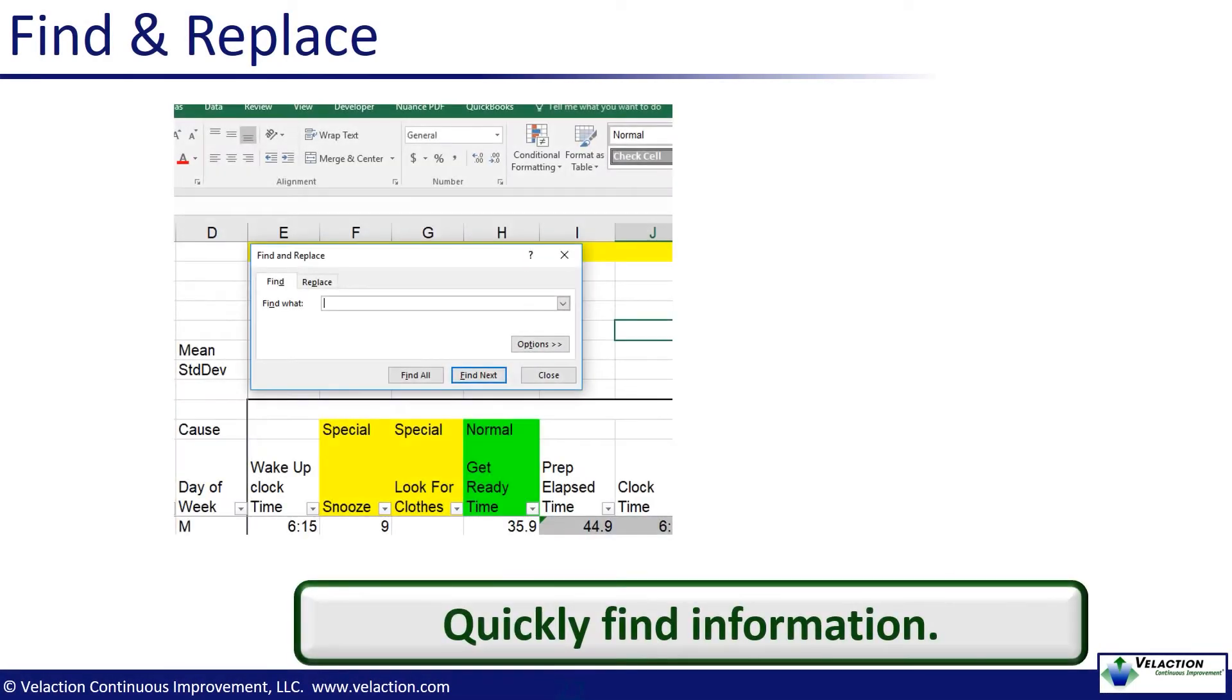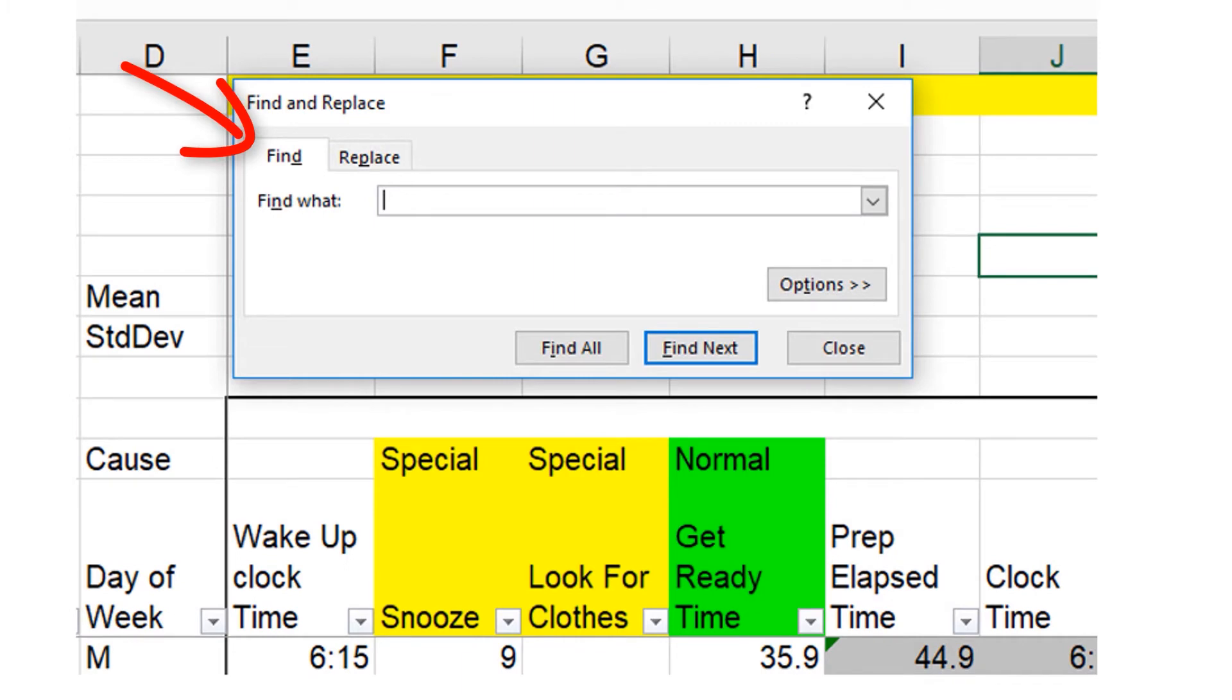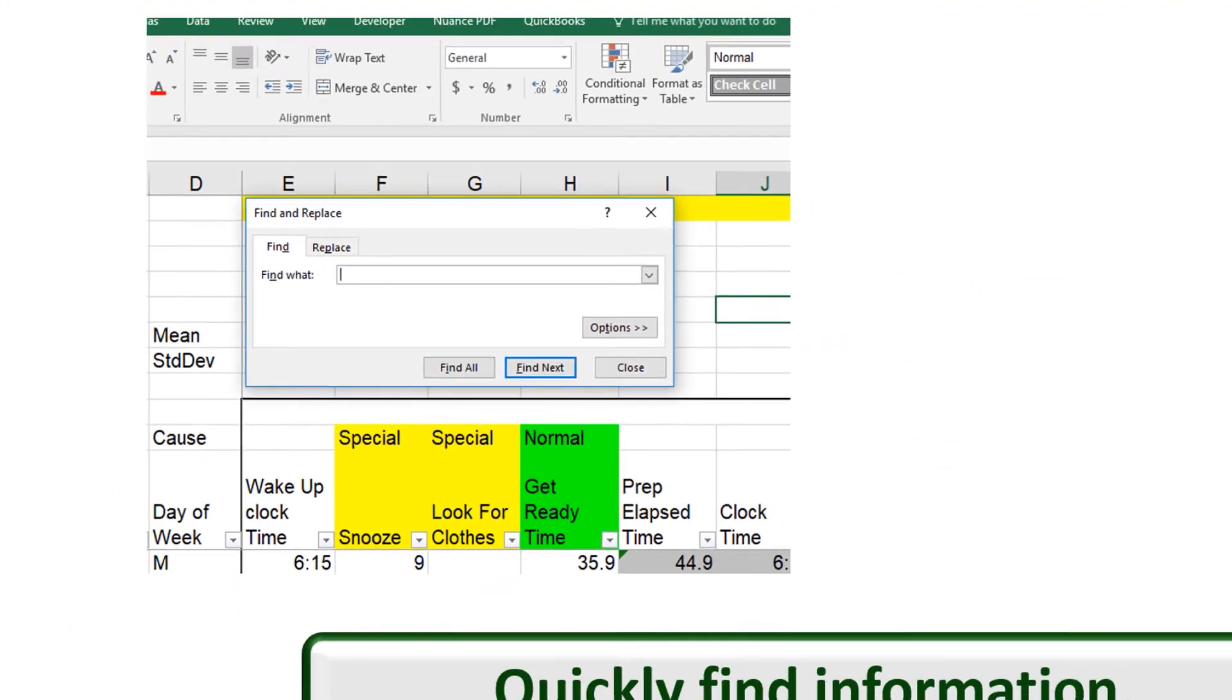Control F brings up the Find and Replace menu. The Find function helps you quickly locate a specific piece of information. The Replace function will probably be used less frequently, but can be an invaluable tool when you are cleaning up your data. Perhaps Jonathan's name was listed as John, Johnny, and Jonathan by different people. Find and Replace can help you make quick work of cleaning up those kinds of problems.